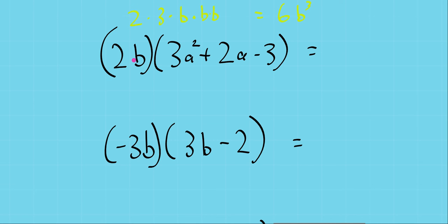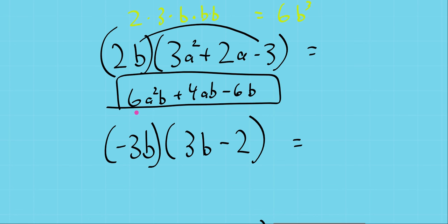So 2b times 3a squared: 2 times 3 is 6, a squared and b have nothing to add to, there's no a's over here, there's no b's over here. 2b times 2a, 2 times 2 is 4, a times b is just a times b, we don't know what they are yet. And 2b times negative 3, 2 times negative 3 is negative 6, and there's a b there with no buddies. So, this is our product.